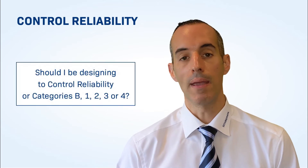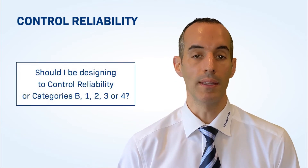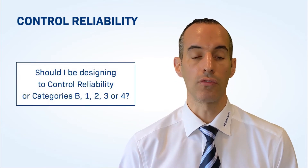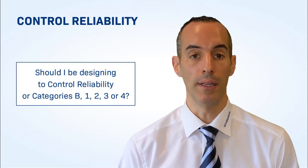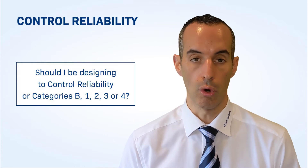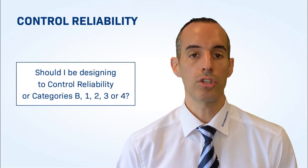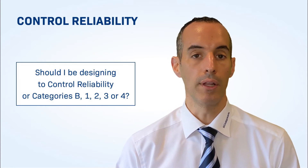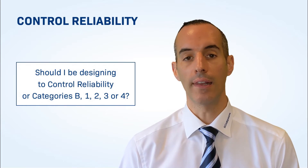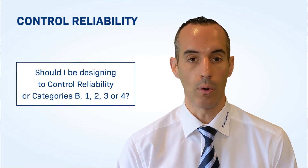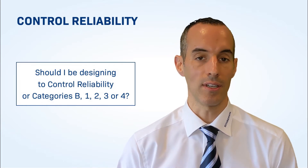Many engineers and maintenance people I've worked with tell me that all they need for their system is to meet control reliability or be control reliable. So where does the term control reliability come from, and how does it fall in line with the categories B through 4 we just discussed?